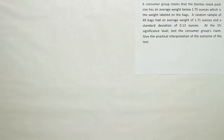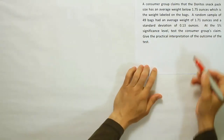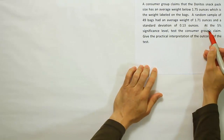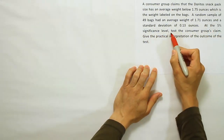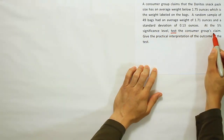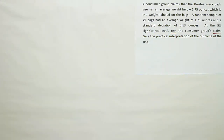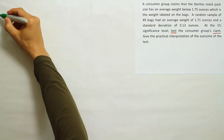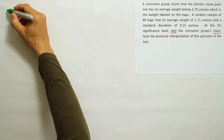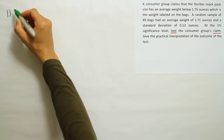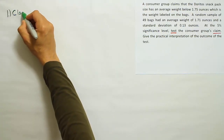Right here, this phrase — 'at the 5% significance level, test the consumer group's claim' — when you see 'test the claim,' you know you're dealing with a hypothesis test. If you're dealing with a hypothesis test, the first step is to identify the claim. There are going to be seven steps in total, so we're going to do step one: identify the claim first.